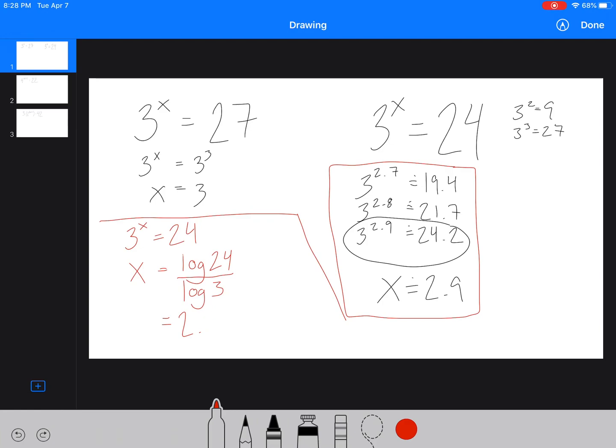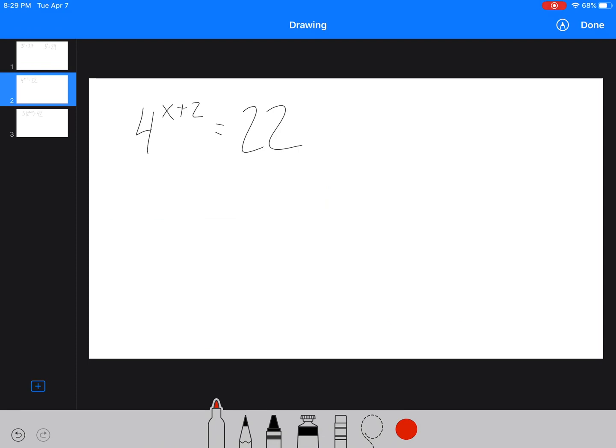The log of 24, which is 1.38, divided by the log of 3, which is 0.477, equals 2.893. Okay, so if you look at that, that's a little bit more accurate. And the number, this was slightly bigger, this is going to be right on.